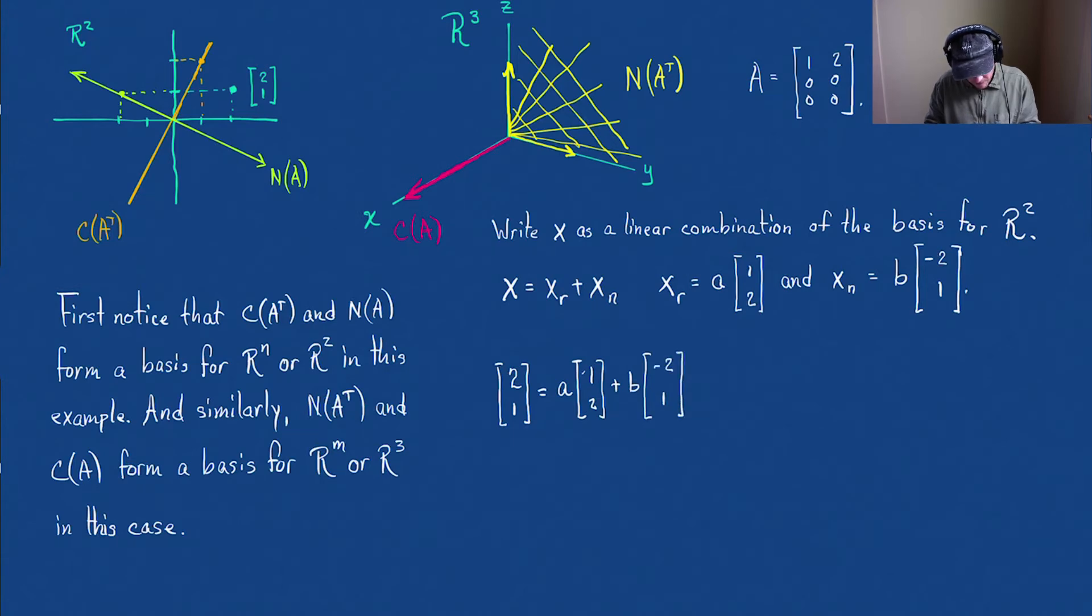Well, I'm going to rewrite this as the vector A and 2A plus the vector of minus 2B and B. OK. And look at what we have.